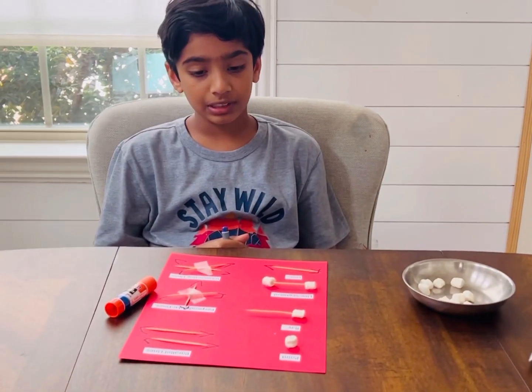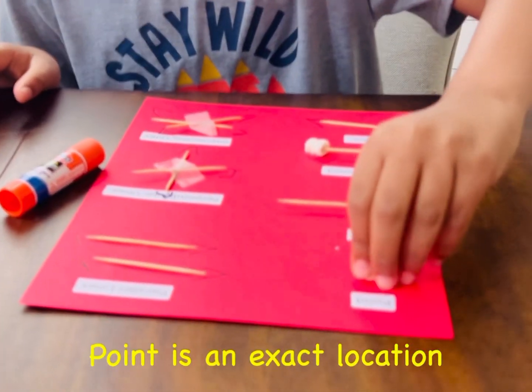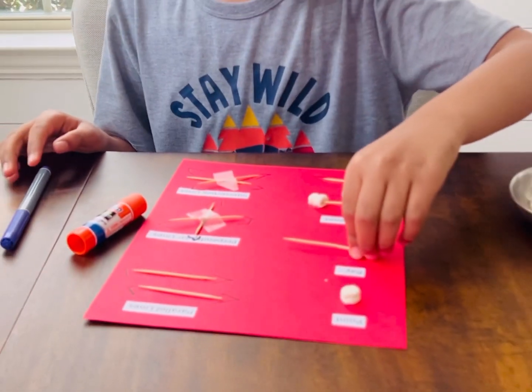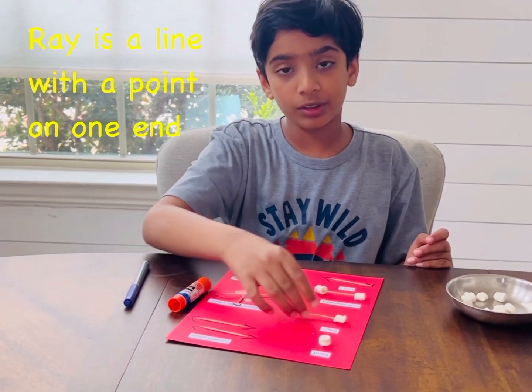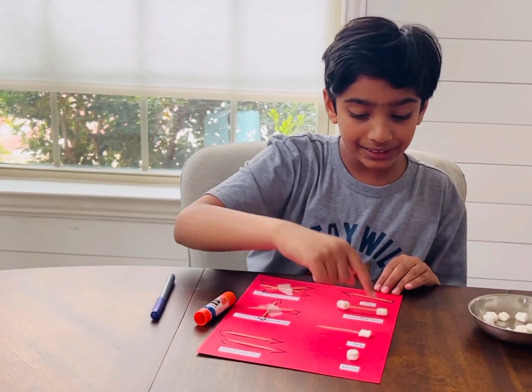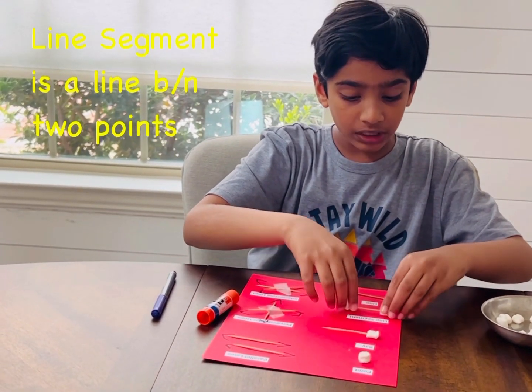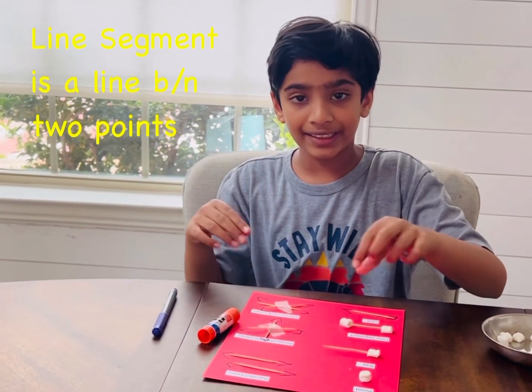These are different types of lines. Let's talk about it one more time. So a point is a dot. A ray has a dot on one end, but the other end is going to be a straight line. And a line segment is going to be two dots on the ends, and a line in the middle.